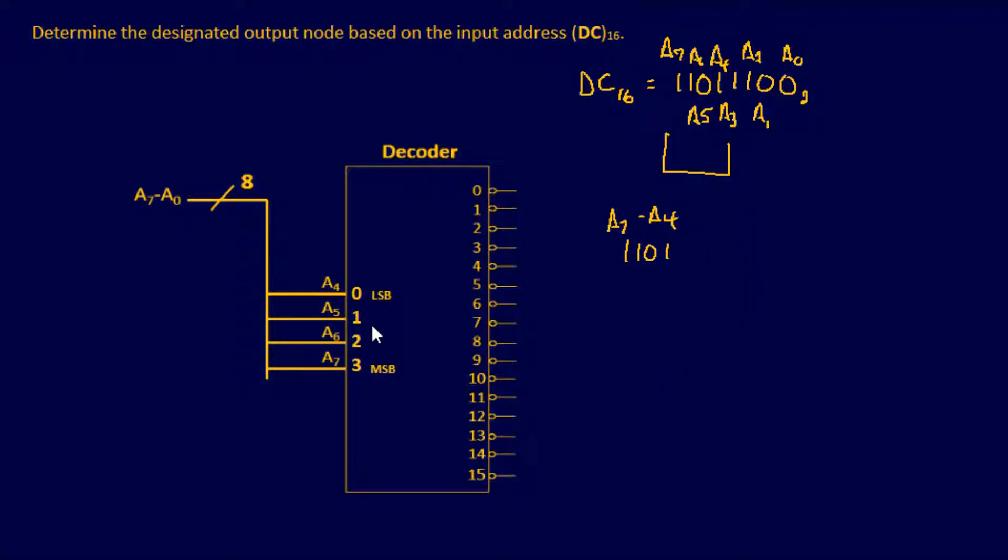So if you're going to actually put this in your decoder over here, it's going to be the least significant bit first, which is 1, then A5 is 0, A6 is 1, and A7 is 1.